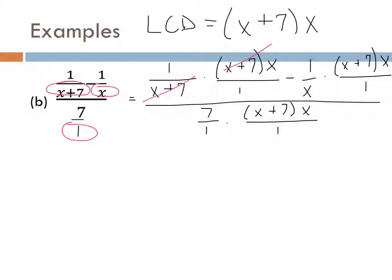Now that we have the LCD, we multiply every piece by it. Yes, it will look big and complicated, but it's the same exact procedure for every problem. After rewriting the original problem with the LCD next to each fraction, we cancel as much as we can. Let's do the easy stuff first — the B squareds and the A squareds that cancel out exactly. For the partial cancellations, the A here cancels with one of the A's in A squared, leaving a single A. One B cancels, leaving B squared.